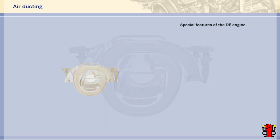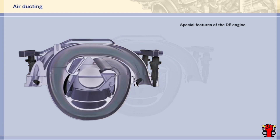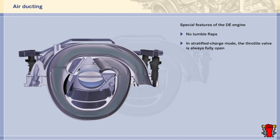In the air ducting system of the DE engine there are two particular features which distinguish it from the KE variant. Firstly, there are no tumble flaps. Secondly, the throttle valve actuator is only used in homogenous mode to regulate intake air — in stratified charge mode it is always fully open, so the engine is de-throttled.